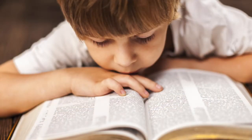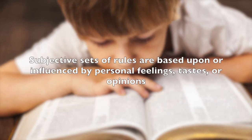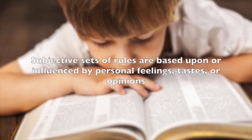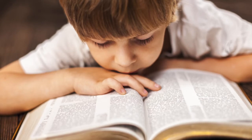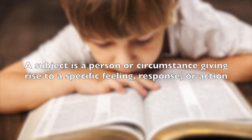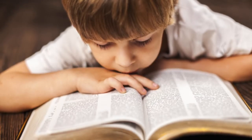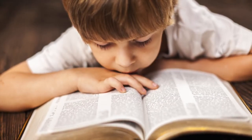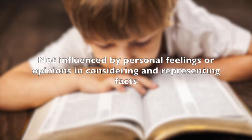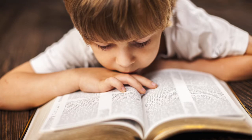Reasoning can be contrasted with cognitive processes governed by a subjective set of rules. Subjective sets of rules are based upon or influenced by personal feelings, tastes, or opinions, and are dependent upon the specific experience of the subject. A subject is a person or circumstance giving rise to a specific feeling, response, or action, and thus is specific to that instance. By contrast, objectivity means not influenced by personal feelings or opinions in considering and representing facts, and not dependent upon the specific subject for existence or actuality.